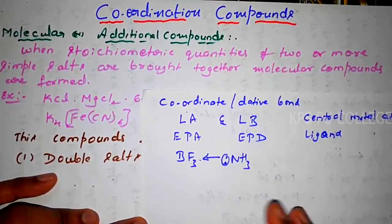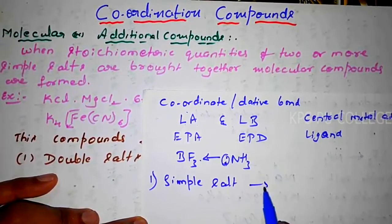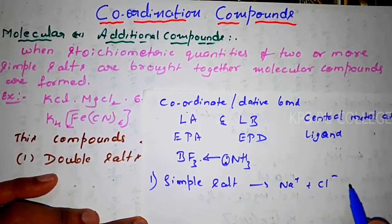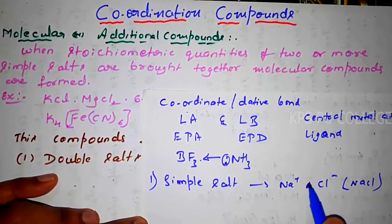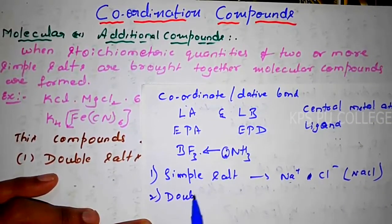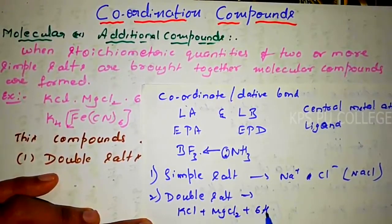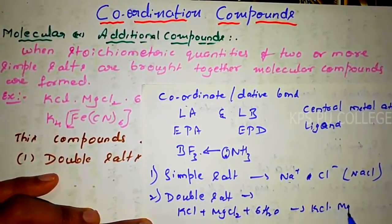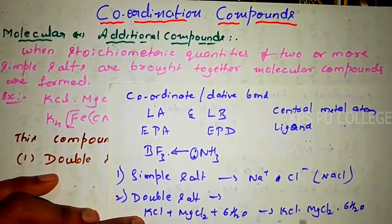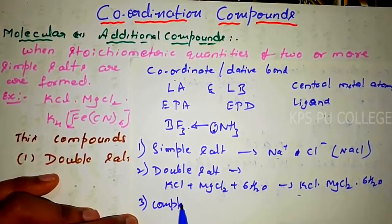Before discussing that, I would like to explain the different types of salts. First is the simple salt — for example, NaCl (sodium chloride), which gives Na+ and Cl− ions. Then we have another kind called the double salt, which is a combination of two or more salts — for example, KCl plus MgCl2 dissolved in water gives KCl·MgCl2·6H2O, called carnalite. And there is also the complex salt.